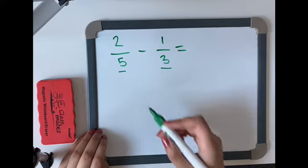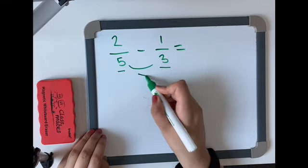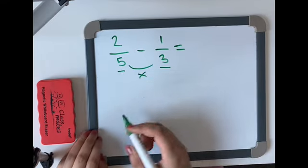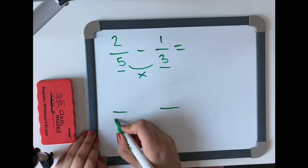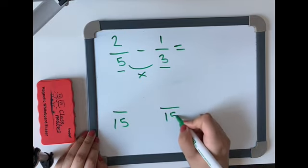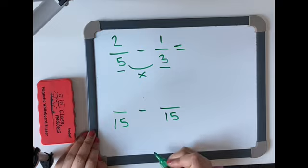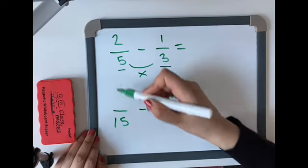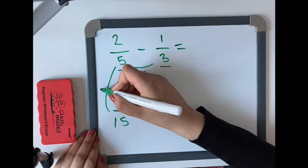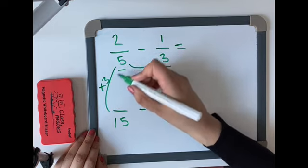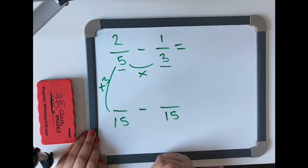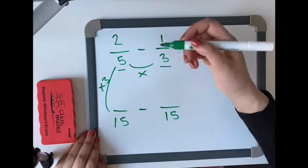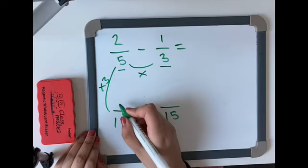So the first step we need to do is to multiply them. So 5 times 3 equals 15. And don't forget your subtraction sign in the middle. We then look on this side where we look at how do I get from 5 to 15. I multiply it by 3. 5 times 3 equals 15. What I do to the bottom I must do to the top. So 2 times 3 equals 6.